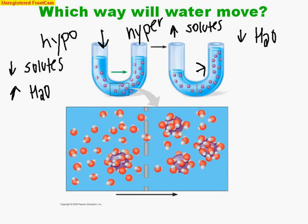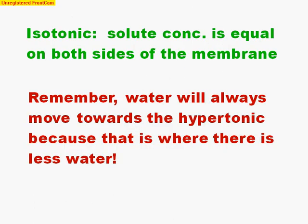Water always moves towards the hypertonic because that's where there is less water. Going back to the picture — hypertonic means more solutes and less water, you see less blue — and that is the direction that water will move. The hard part is going to be determining where it is hypertonic and where it is hypotonic. If you can determine that, you'll be able to tell which way water moves and why.